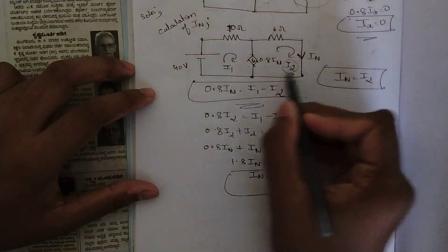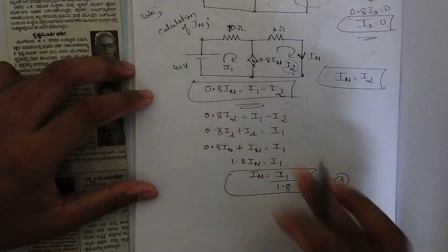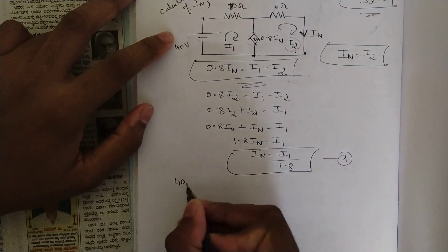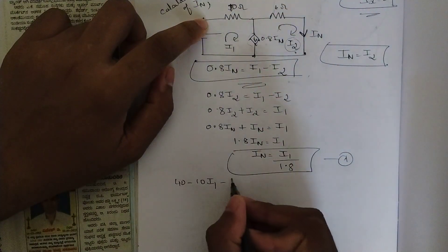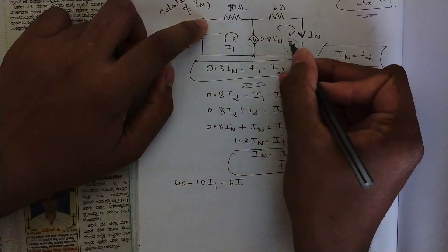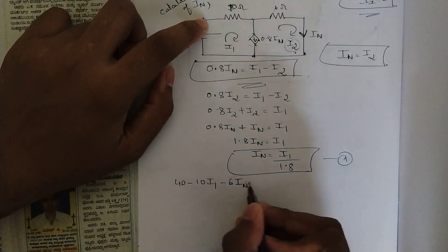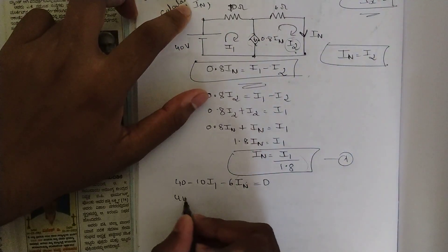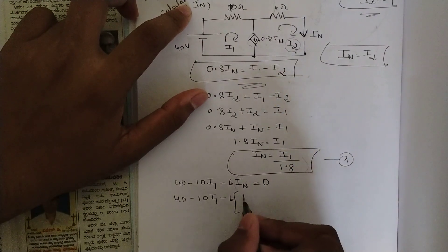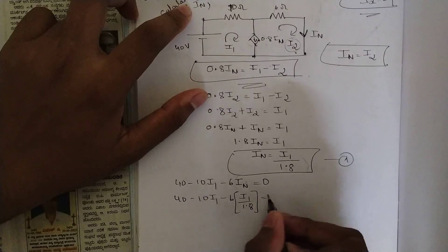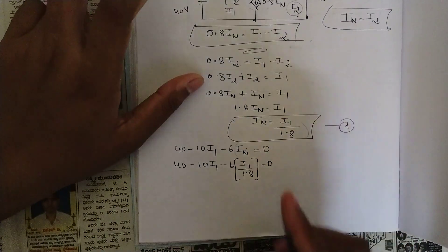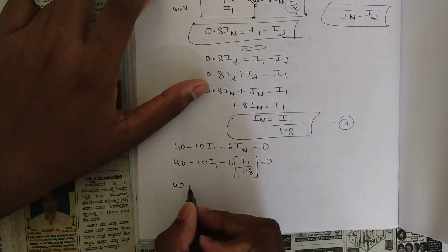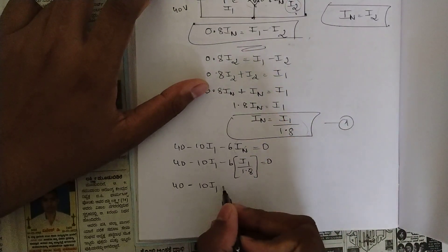Writing the super mesh KVL equation around the combined loop: 40 minus 10 I1 minus 6 IN equals 0. We write minus 6 IN directly because I2 equals IN. Substituting I1 equals 1.8 IN: 40 minus 10 I1 minus 6 divided by 1.8 times I1 equals 0.